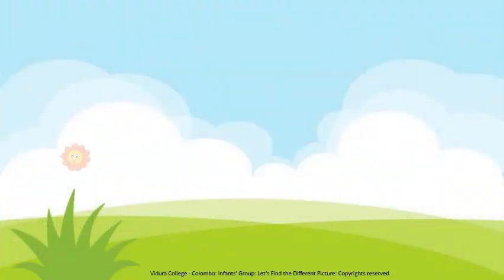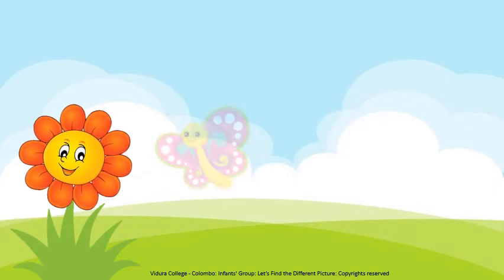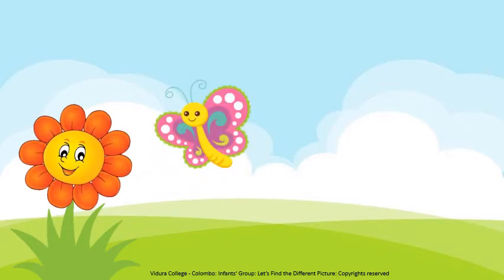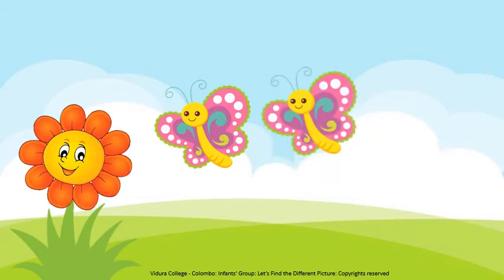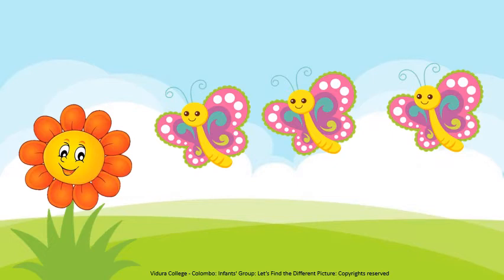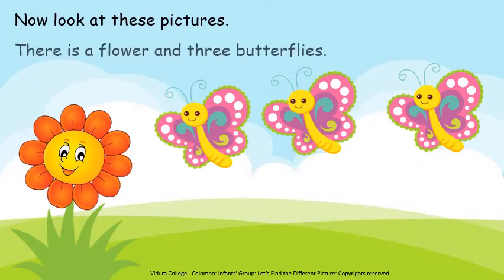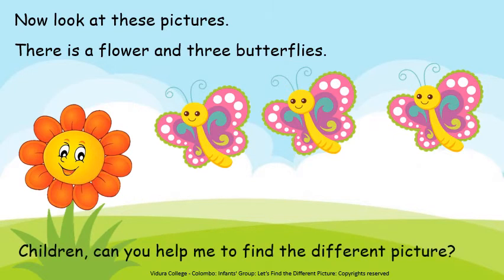Children, look! A flower is blooming. Can you all see this beautiful butterfly? There is another beautiful butterfly in the garden. Here comes another one. Now, look at these pictures. There is a flower and three butterflies. Can you help me to find the different picture? The three butterflies are similar in colour, in shape and in size.